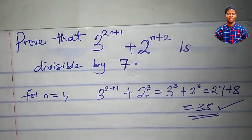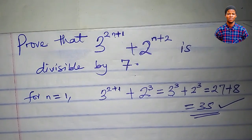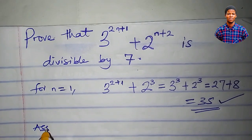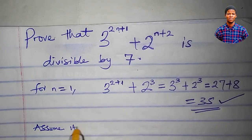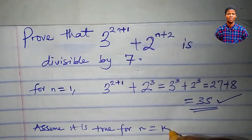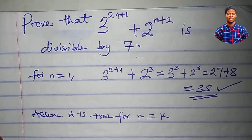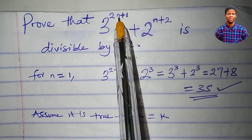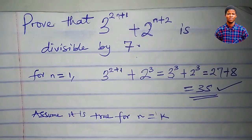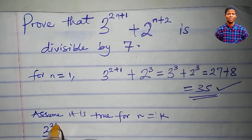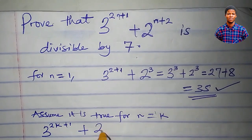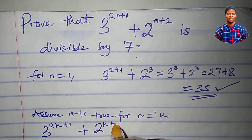Having done this, let us assume that it is true for n equal to k, where k is a positive integer. In place of n, we write k, so the expression becomes 3 to the power of 2k plus 1, plus 2 to the power of k plus 2.